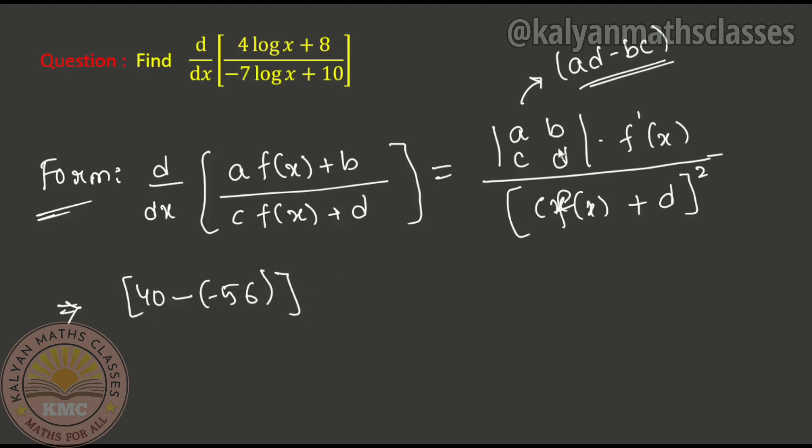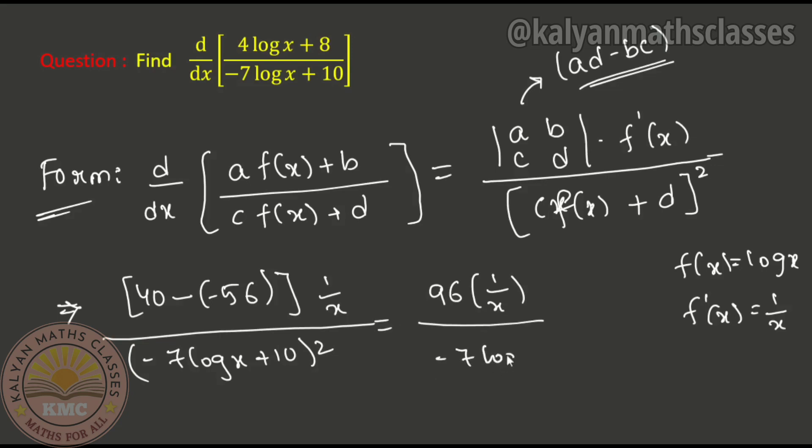The value is 96. Now, f(x) here is log x, so f'(x) is 1/x. So we have 96 times 1/x upon [-7 log x + 10] whole square. So the answer is 96/[x(-7 log x + 10)²].